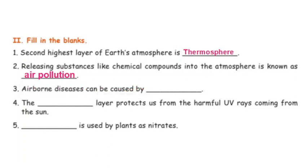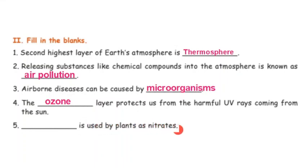Third blank: airborne diseases can be caused by microorganisms transmitted through the atmosphere. Fourth blank: we have to protect the ozone layer, which is in the stratosphere at a height of 22 to 30 km, to protect us from UV rays. Fifth blank: nitrogen is used by plants as nitrates.